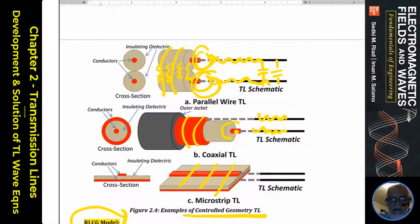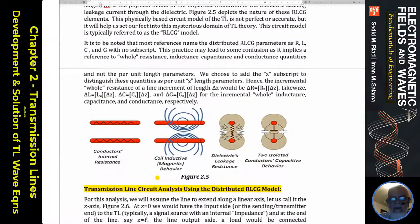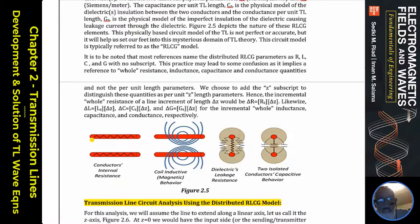Looking at internal resistance, inductance, magnetic field, capacitance between the two conductors, as well as leakage current through the dielectric — whether it's coaxial or parallel configuration. These internal elements are distributed. They are not lumped at some particular location; they are everywhere along the length of the wire itself, and they are uniformly distributed in the controlled geometry configuration.